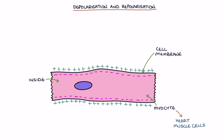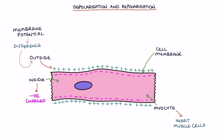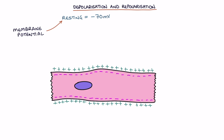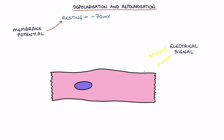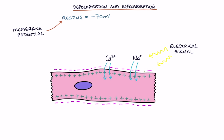The inside of the myocyte cell is negatively charged compared to the outside. The membrane potential refers to the difference in charge between one side of the membrane and the other. The normal resting membrane potential when the myocytes are not contracting is minus 70 millivolts. Electrical signals trigger the movement of ions — particularly sodium and calcium, which are both positively charged — into the cell, causing the membrane potential to go from minus 70 millivolts to plus 30 millivolts. This is called depolarization and it triggers muscle contraction.